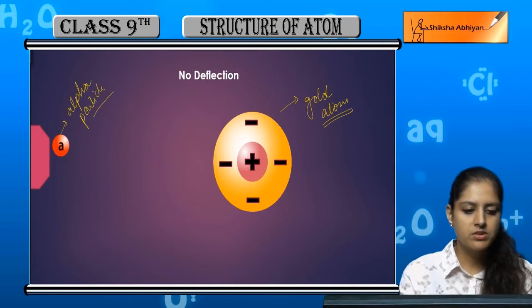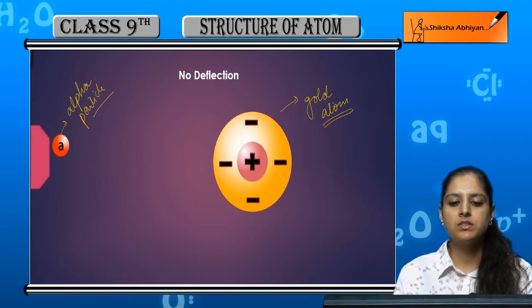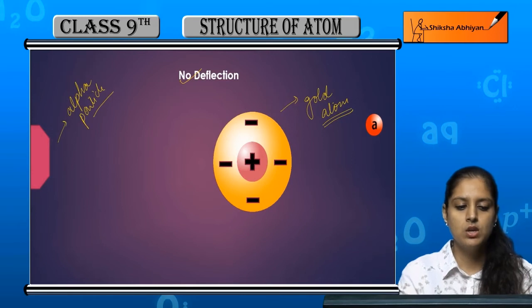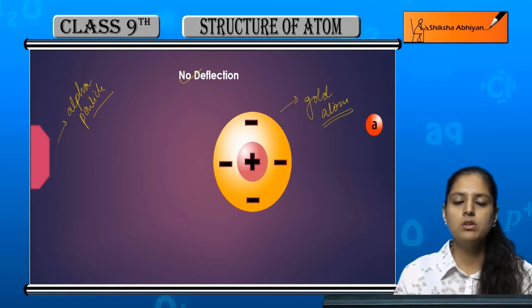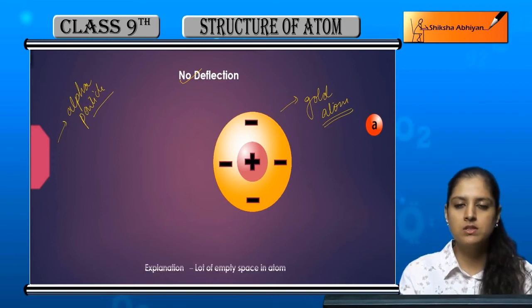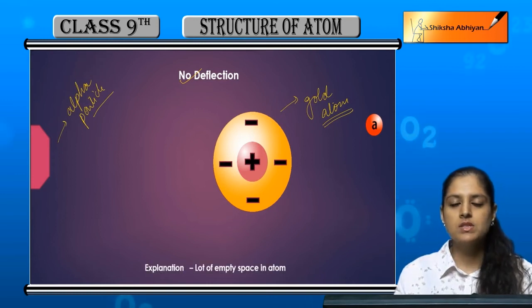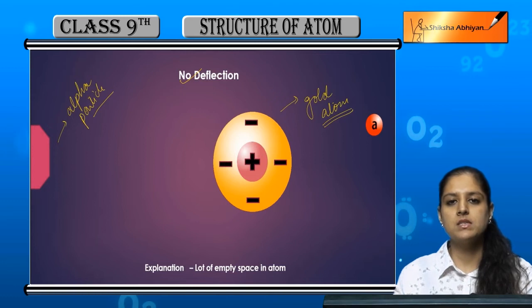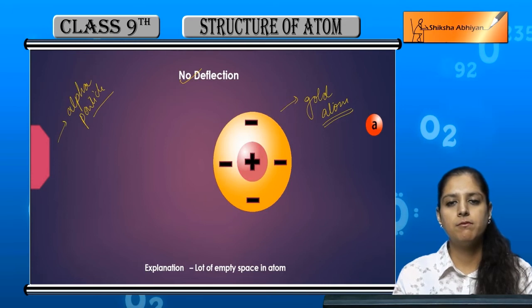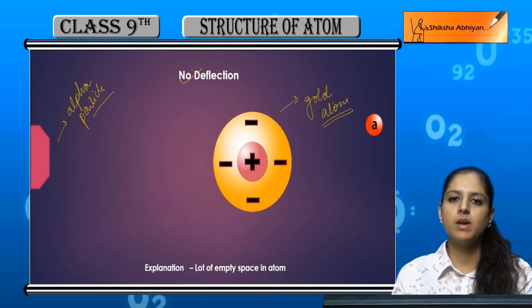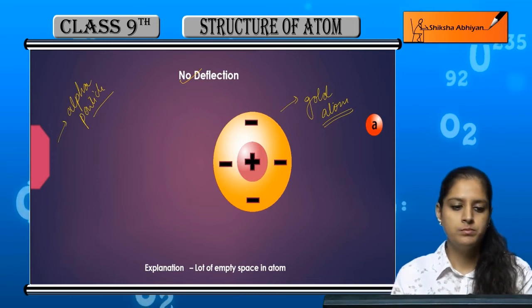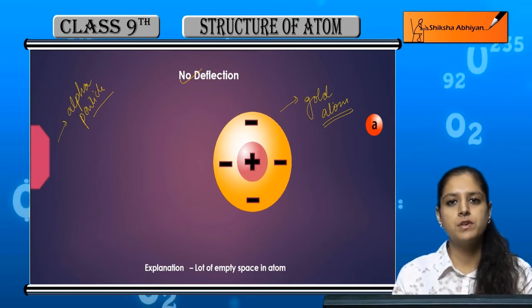The first type of deflection was no deflection. The alpha particle passed without deflecting to the other side. The reason for this is that there was a lot of empty space in the atom, which is why it went straight through without deflecting.